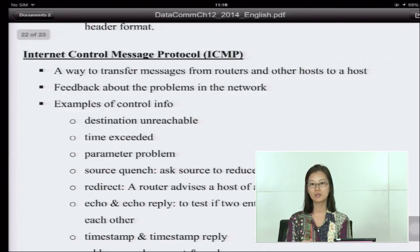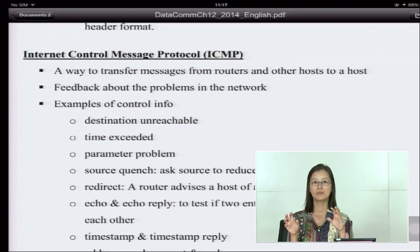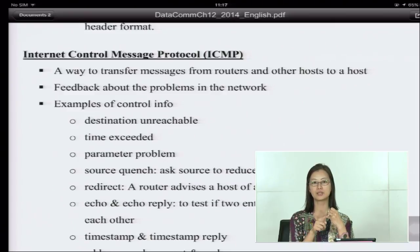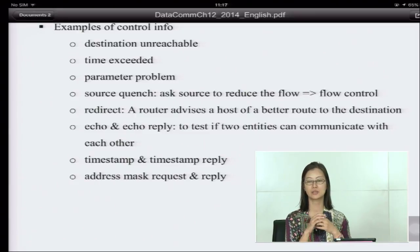There is another protocol called the Internet Control Message Protocol (ICMP). This is the way to transfer messages from routers and other hosts to a host — not for sending data, but usually for feedback about problems inside the network. For example, control information includes: destination unreachable — like a return letter from the post office saying the destination cannot be reached; time exceeded — meaning timeout; parameter problems; and source quench, which means flow control, asking the source to reduce the flow so the receiver can handle it.